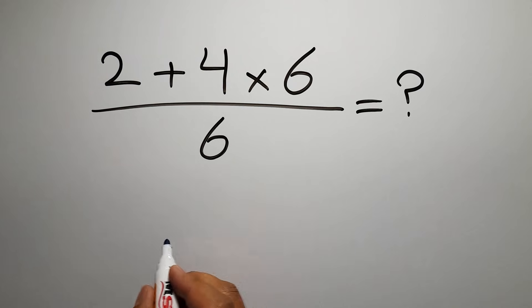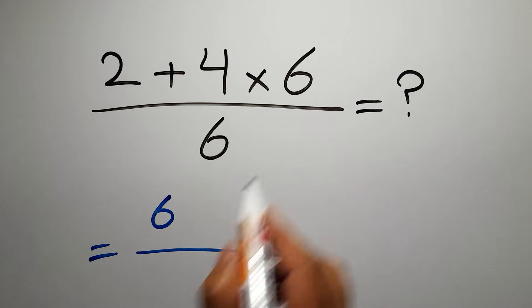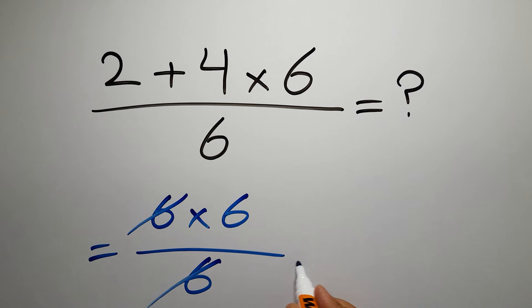2 plus 4 gives us 6 so we have 6 times 6 over 6. We can easily cancel this 6 and this 6 so we have just 6, but this answer is not correct because according to the order of operations...